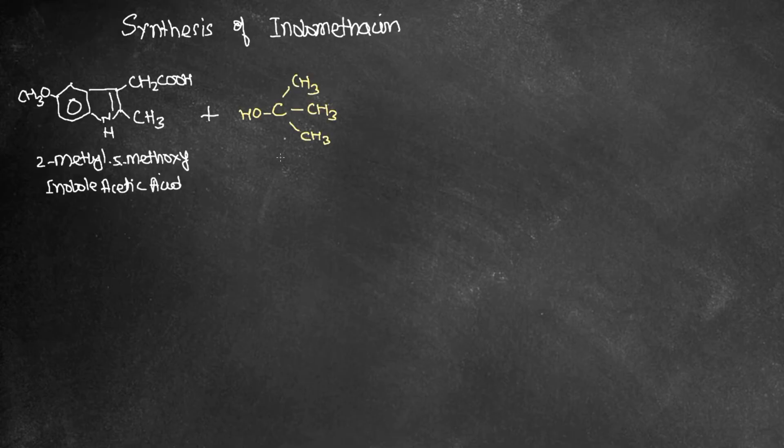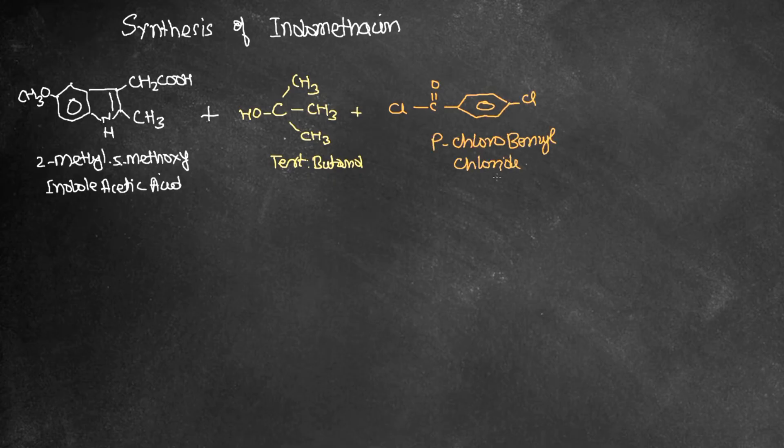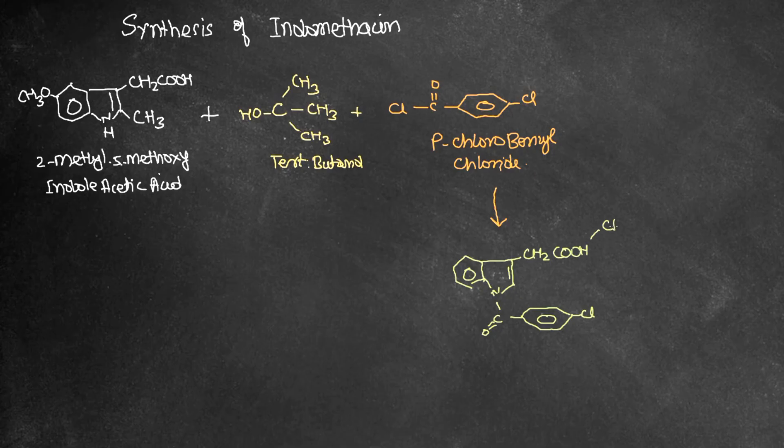This undergoes reaction with tert-butanol along with another compound, para-chlorobenzyl chloride. These three compounds undergo a reaction and form a condensed ring. The first one is the indole acetic acid, the second one is the tert-butanol, and the third one is para-chlorobenzyl chloride.